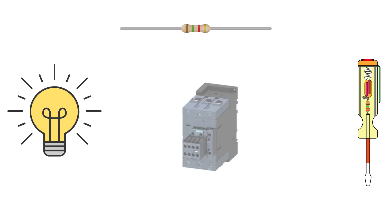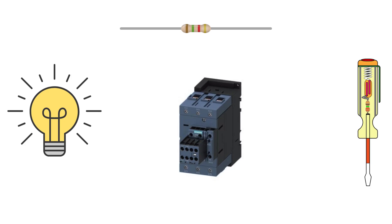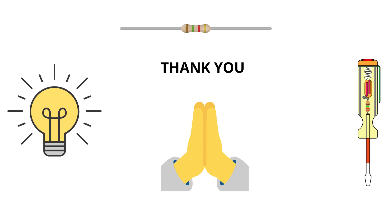And that's it. You have just learned the basics of electrical contactors and the difference between NO and NC contacts. These simple devices make it possible to control high power systems safely and efficiently, and now you have got a solid understanding of how they work. If you found this video helpful, don't forget to hit that like button, subscribe and ring the bell so you don't miss any future electrical engineering content. If you have any questions or topics you would like us to cover next, drop a comment below. We are always here to help you learn. Thanks for watching and we'll see you in the next video.